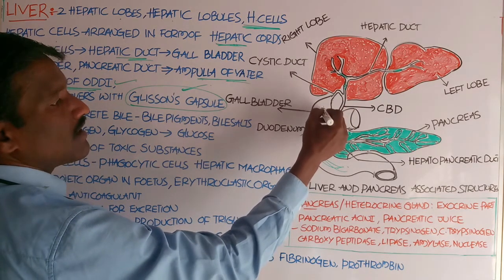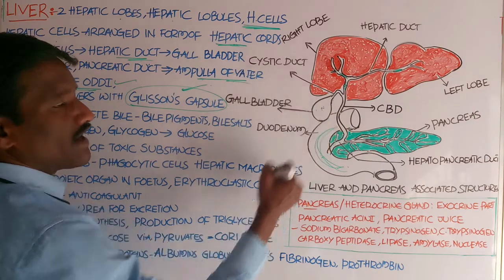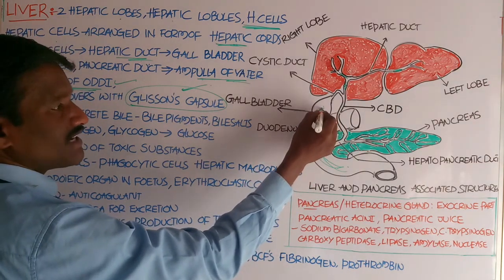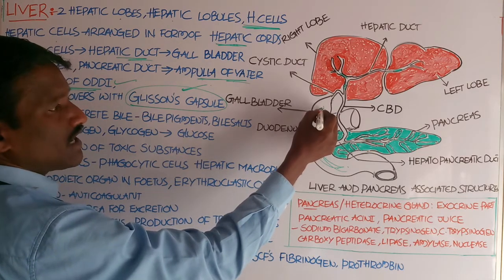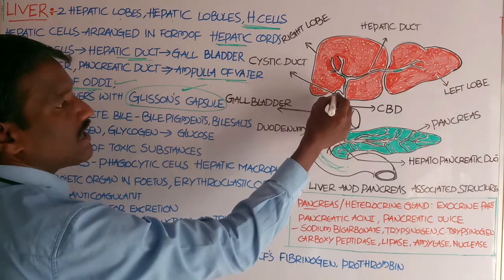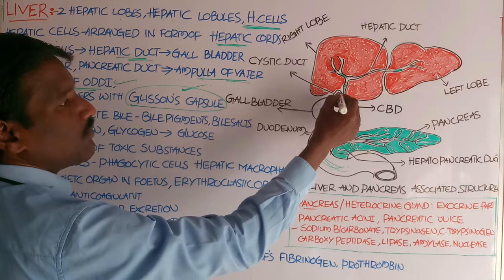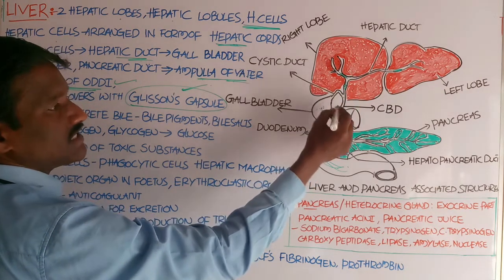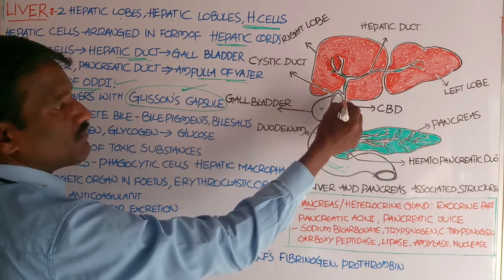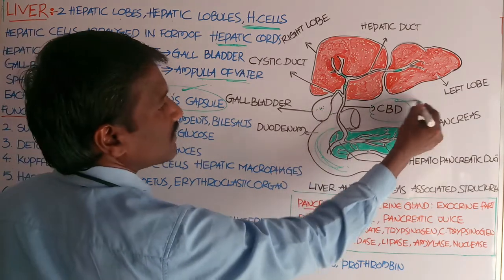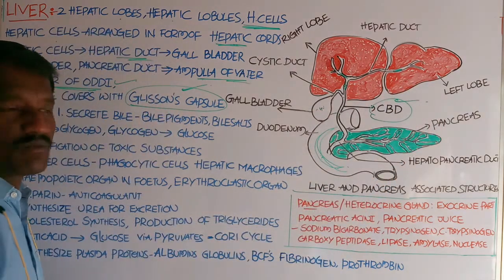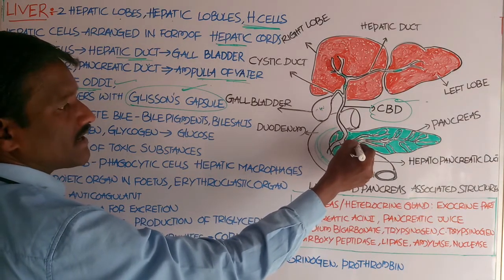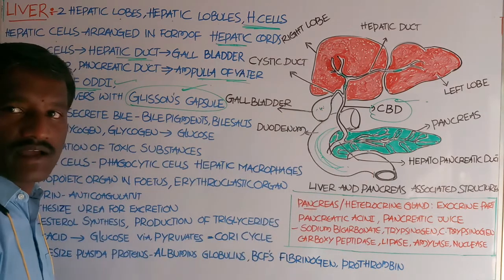The gallbladder is a small, sac-like structure. Bile juice is concentrated and stored in the gallbladder. By the help of the cystic duct, the hepatic duct and cystic duct combine to form the common bile duct. The common bile duct then combines with the pancreatic duct coming from the pancreas.